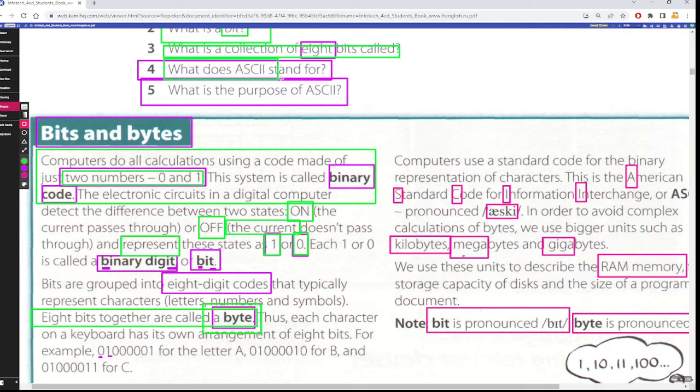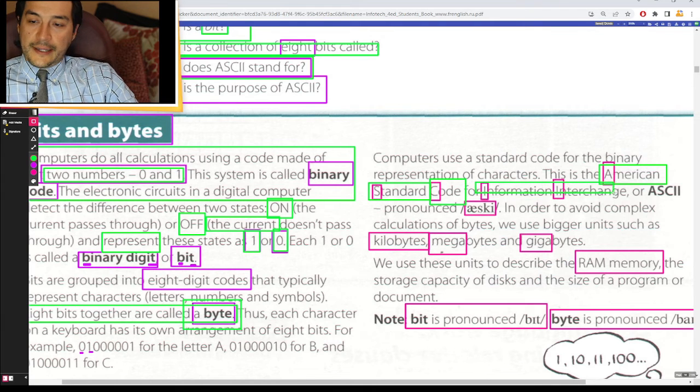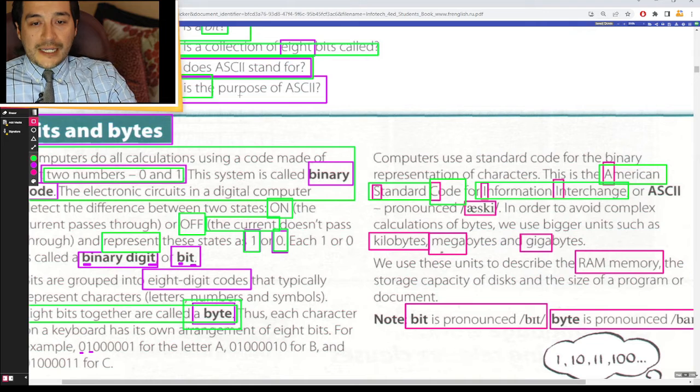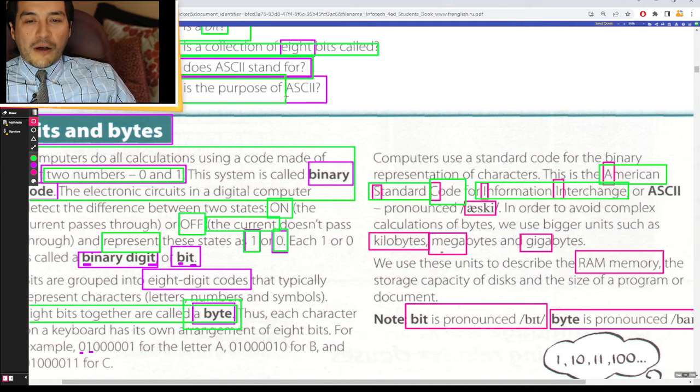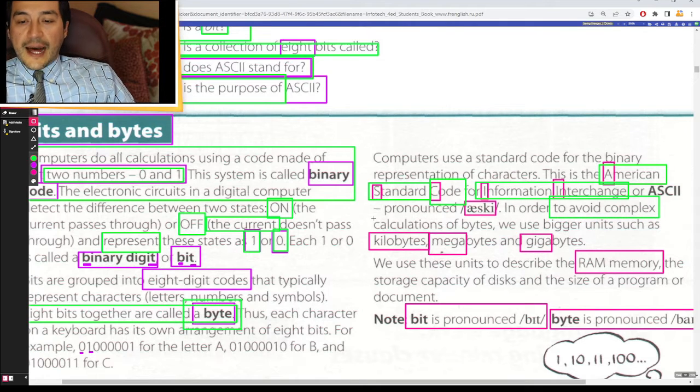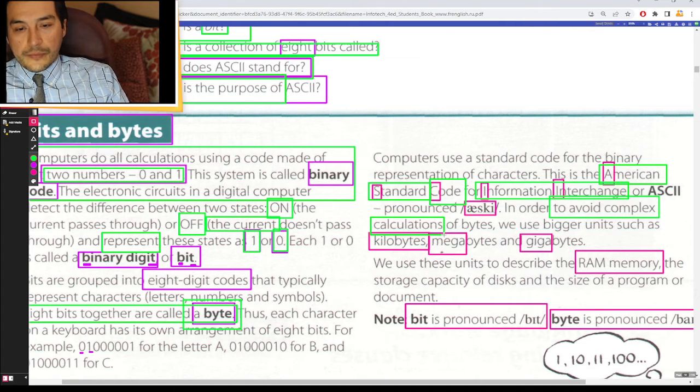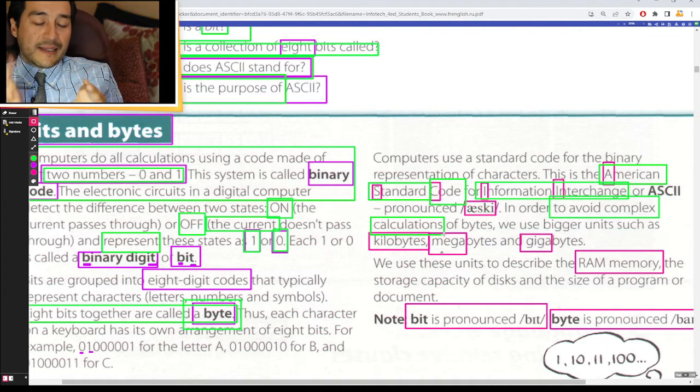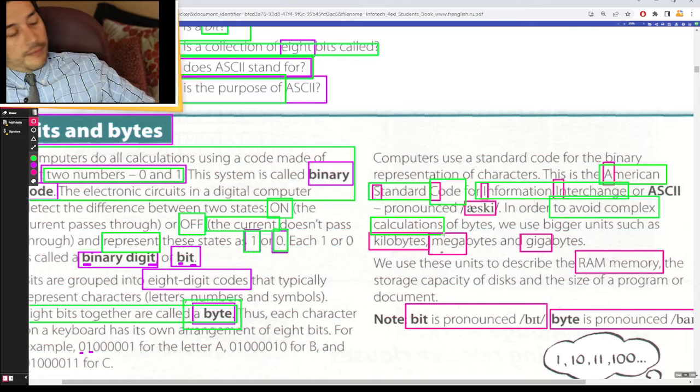What does ASCII stand for? American Standard Code for Information Interchange. And what is the purpose of American Standard Code for Information Interchange? Well, the purpose is to avoid complex calculations of the bits and the bytes. So we created the kilobytes, the megabytes, and the gigabytes. That's the American Standard Code for Information Interchange.